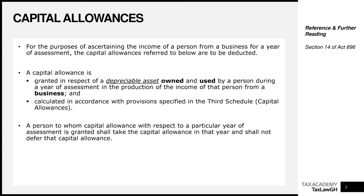A capital allowance is granted in respect of a depreciable asset which must first be owned and used by a person during a year of assessment in the production of that person's income from a business. So for you to get capital allowance: first, it must be on a depreciable asset; second, you must exercise some form of ownership over that asset; and third, you must actually use that asset to produce the income of your business.